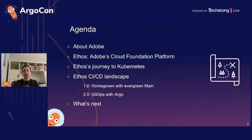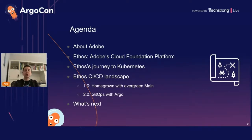I'll start by telling you a bit about Adobe and its cloud foundation platform, Ethos. We'll talk about the journey to Kubernetes and our existing CI/CD landscape — how we started with a homegrown solution using the evergreen main philosophy, and how and why we are moving to use GitOps with Argo. And finally, I'll tell you what's next for us.